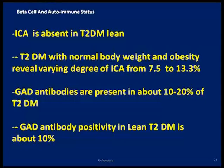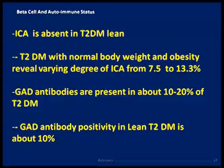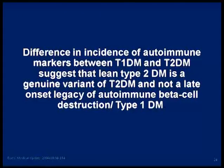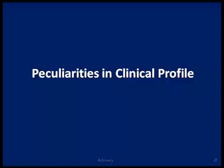In normal-weight type 2 diabetes mellitus there is a varying degree of ICA positiveness — from 7.5 to 13.3 percent — so not all type 2 diabetics are ICA-negative. It is specifically the lean patients who are ICA-negative. GAD antibodies are present in type 1 as well as in some type 2 and lean type 2 patients. It is the absence of ICA that is the distinguishing characteristic of lean type 2. This difference in autoimmune markers between type 1 and lean type 2 diabetes mellitus confirms that lean type 2 is a genuine variant of type 2 diabetes mellitus, not a late-onset autoimmune type 1.